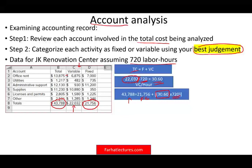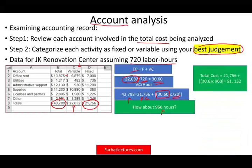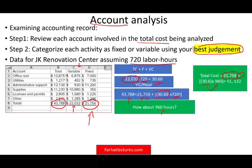The formula for this center is: Total Cost = $21,756 (fixed cost) + $30.60 × activity level, giving $43,788 for this month. This formula helps us predict future months. For example, if a particular month we spend 960 hours, total cost = $21,756 + ($30.60 × 960) = $51,132. It won't be exactly $51,132, but if we're close, our analysis is correct. If we're way off, we need to determine why and possibly create a new formula.